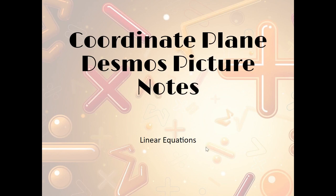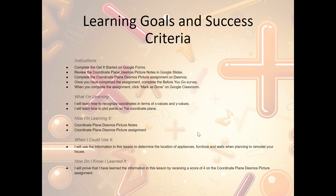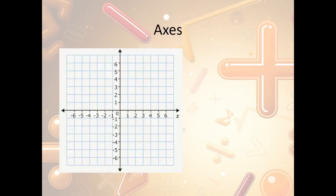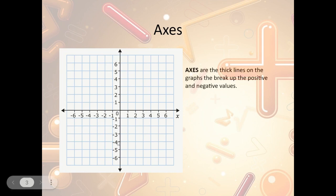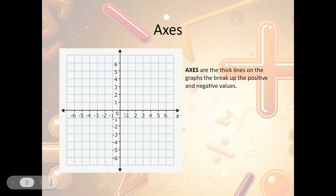Let's take a look now at the coordinate plane Desmos picture notes. The notes begin with the learning goals and success criteria. Within the coordinate plane, we should notice there are lines that break up the x and y values. The axes are the thick lines that break up the positive and negative values. We have our x values going side to side, with positives on one side and negatives on the other, broken up by a line that separates the negative y's and the positive y's, creating positives and negatives in each of the boxes.